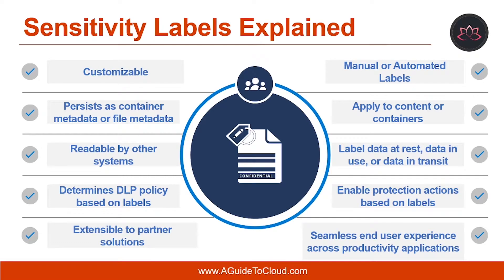So what are these sensitivity labels and why are they important? To get work done, people in your organization collaborate with others both inside and outside the organization. This means that content no longer stays behind a firewall — it can roam everywhere across devices, apps, and services. When it roams, you want it to do so in a secure, protected way that meets your organization's business and compliance policies. The sensitivity label from the Microsoft Information Protection Framework lets you classify and protect your organization's data while making sure that user productivity and their ability to collaborate isn't hindered.